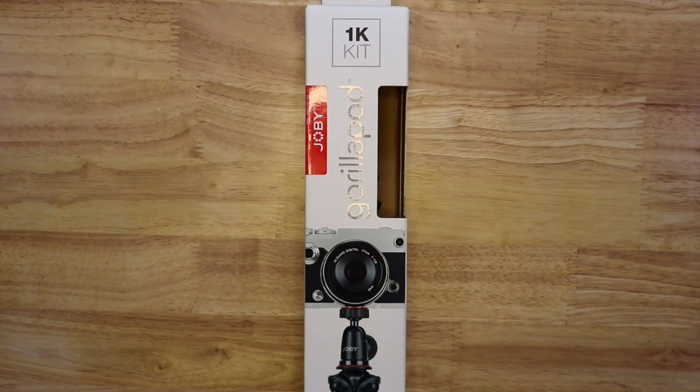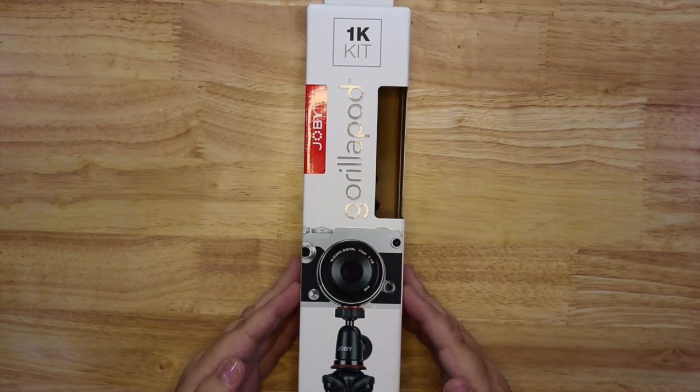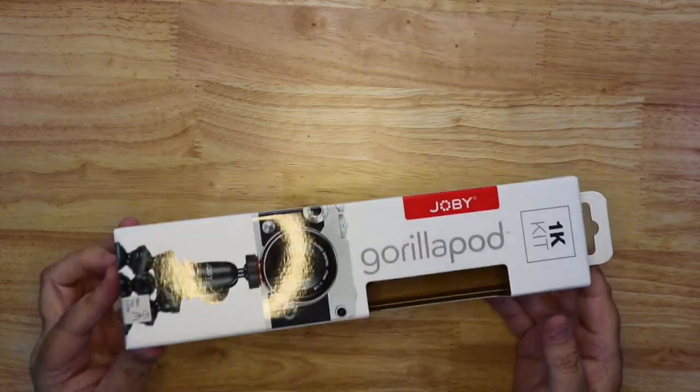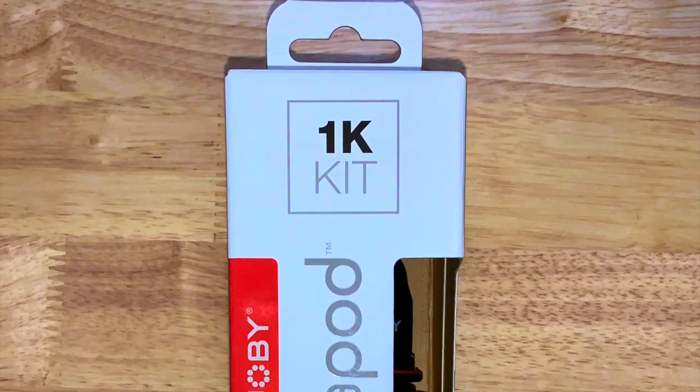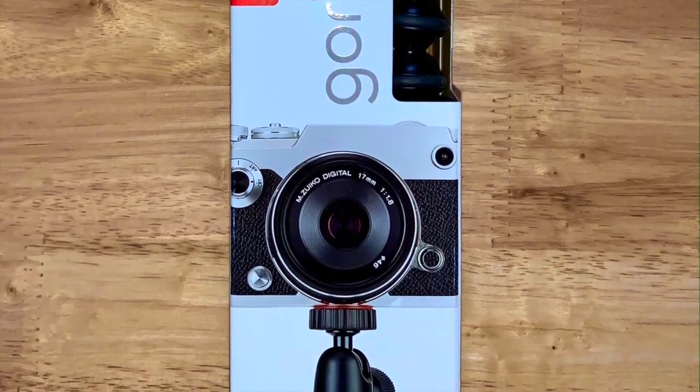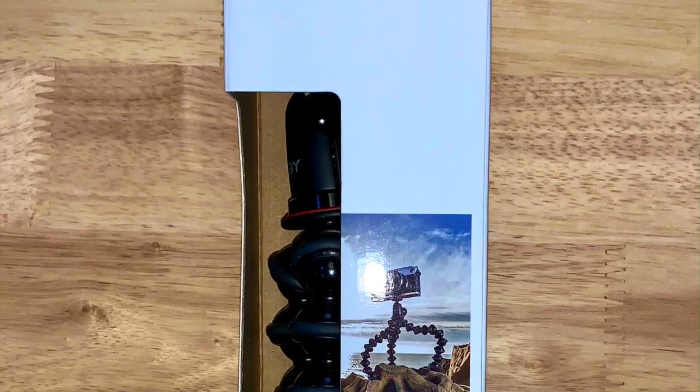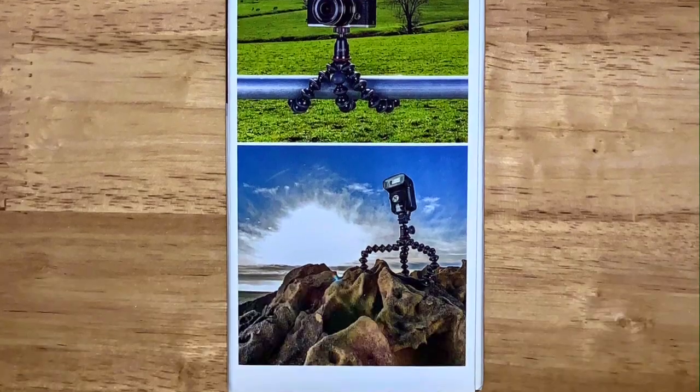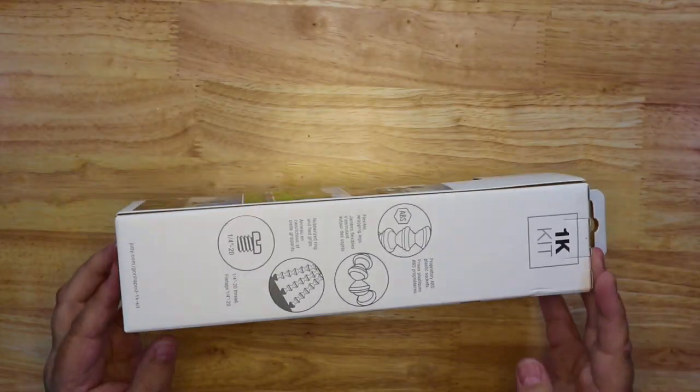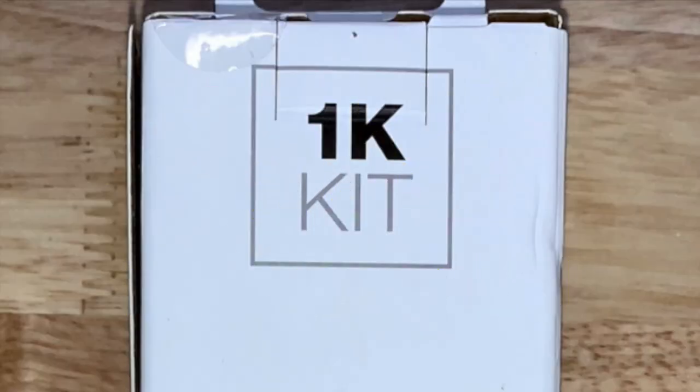Hello again. Today we're going to have a look at the Joby Gorillapod. This is the 1K kit. Now this one doesn't have magnetic legs but it does have the adjustable ball joint head at the top and this is designed for cameras up to 1kg.